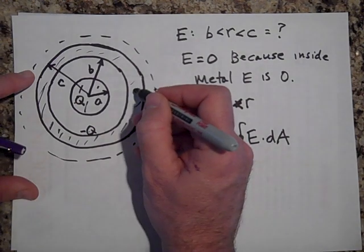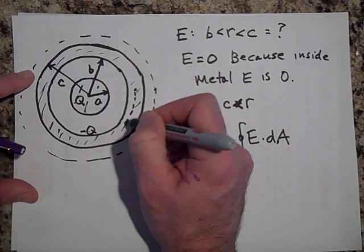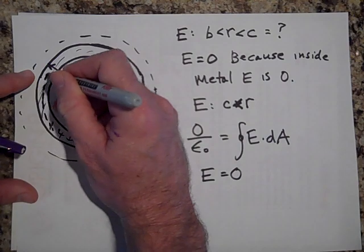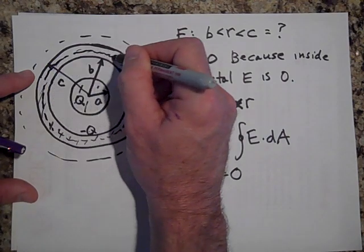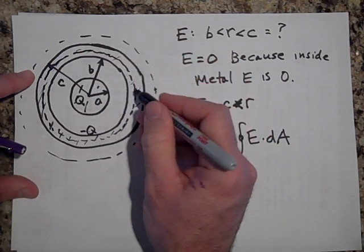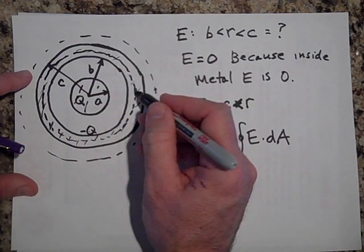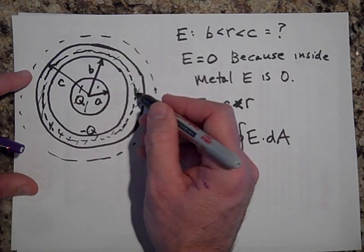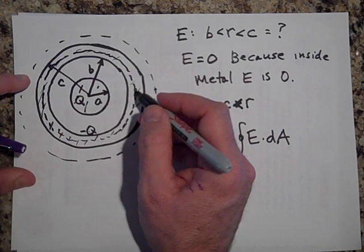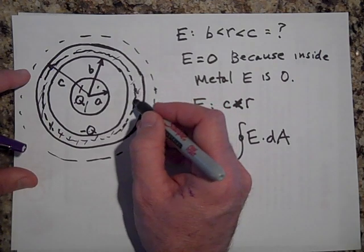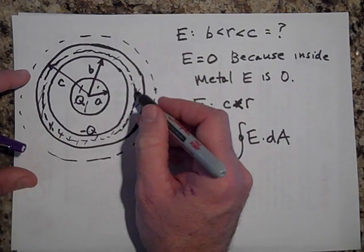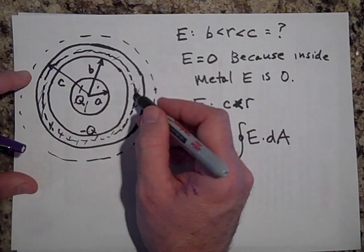If I were to draw a Gaussian surface here, see that Gaussian surface in there right inside the metal, there can't be any flux through that Gaussian surface, the one I'm pointing to, because there's no E there. So like if you do E dot DA at every point on this Gaussian surface, since there's no E, there's no flux.